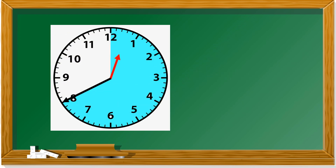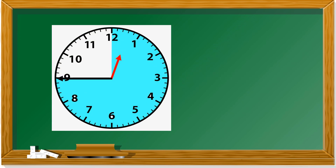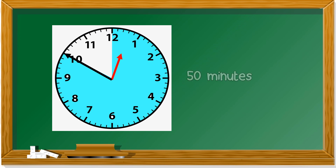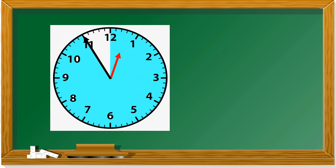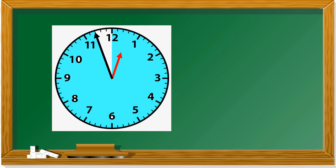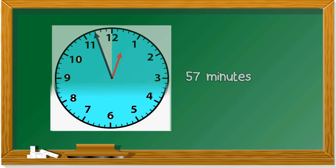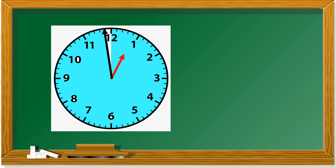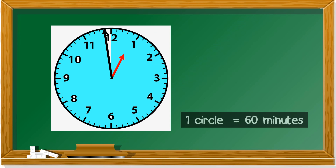40 minutes. 45 minutes. 10 times 5 — 50 minutes. 55 minutes. Then slowly: 56, 57, 58, 59 — last one, 60. If it's all blue, one circle is 60 minutes. So one hour equals 60 minutes — 1 jam, 60 minit.